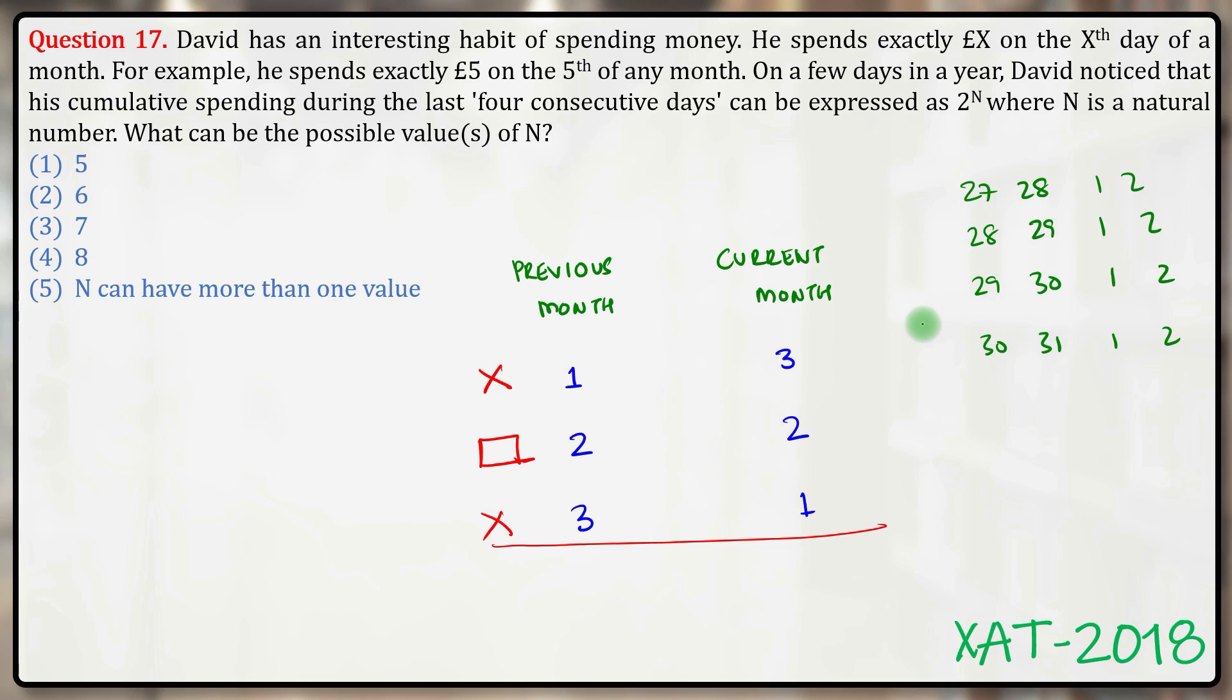the sums in each of these cases are... out of which only 64 is a power of 2, no other power of 2. And therefore